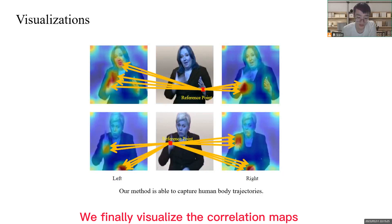We finally visualize the correlation maps of our proposed method. It is observed that our method is able to capture human body trajectories to help understand sign language. Thanks for watching.